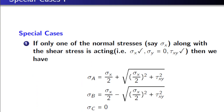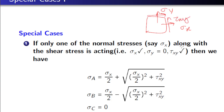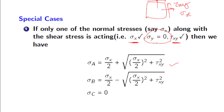Let us see some special cases. Even in 2D, you have sigma x, sigma y, and tau xy. In some cases only one normal stress and a shear stress exist — say sigma x and tau xy are present but sigma y is zero. In that case the above equations simplify: instead of (sigma x + sigma y)/2, you directly write sigma x / 2. The third component is always zero.